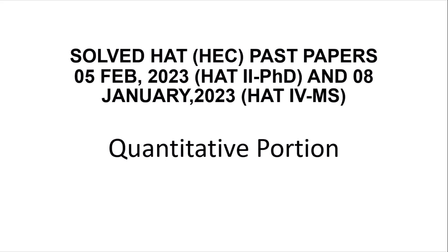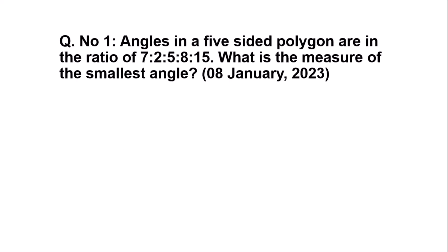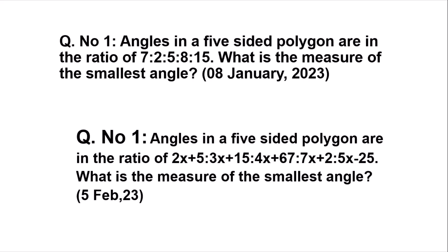Without wasting time, coming on to the first question of the quantitative portion. In the quantitative portion there was a question that appeared on 8th January test HAT 4. The question was: angles in a five-sided polygon are in the ratio of 7:2:5:8:15, what is the measure of the smallest angle? The same question was repeated in HAT 2 for the PhD but with a little modification: angles in a five-sided polygon are in the ratio of 2x+5 and so on.